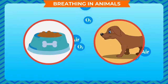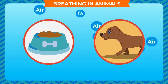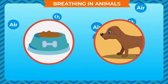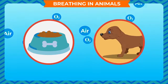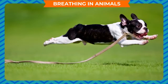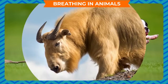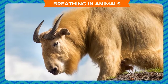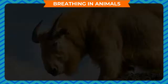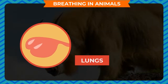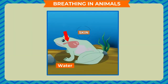Breathing in animals: all animals and human beings breathe in air. Oxygen present in the air is needed to break down the food in the body to get the energy that animals use to do various activities. Land animals breathe in oxygen from the surrounding air through lungs, while aquatic animals breathe in oxygen dissolved in water through their skin or gills.